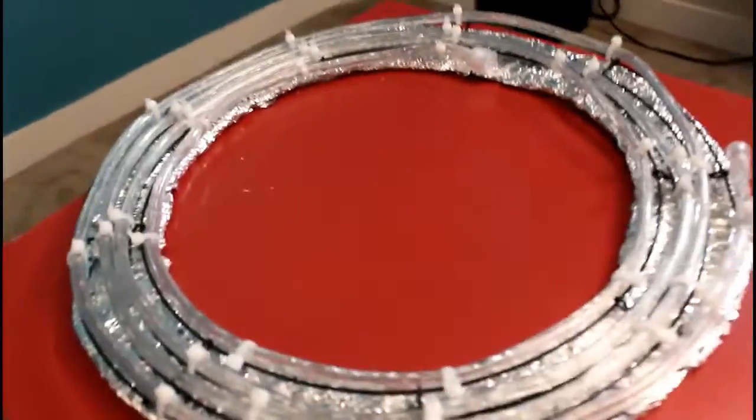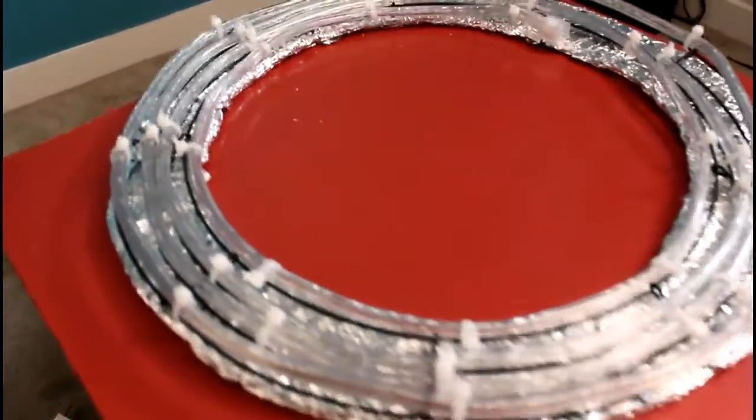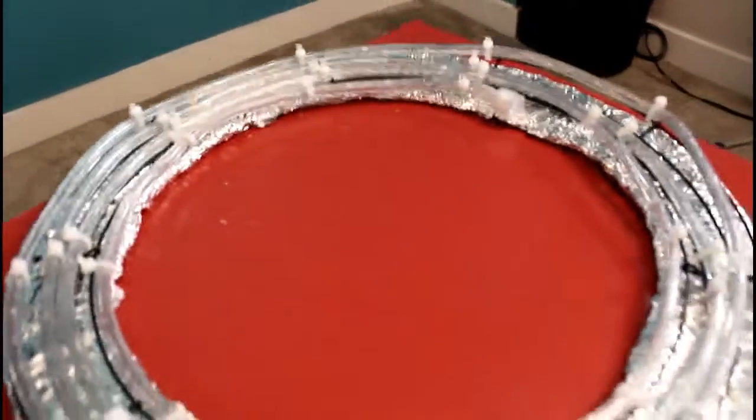So, bam! We snip off the excess. The LED lights are secured to the beautiful wire wreath. And we have it sitting on top of the aluminum foil. And guess what we're going to do next.